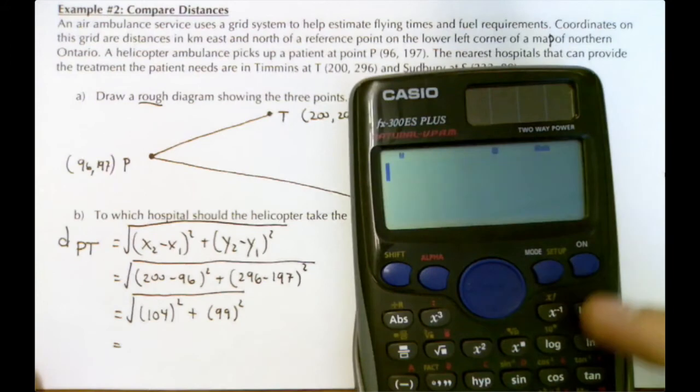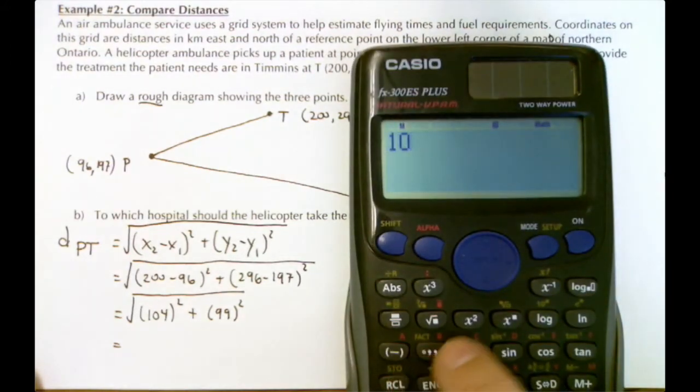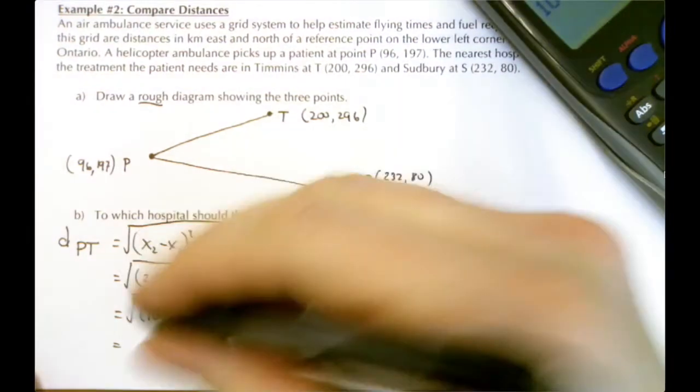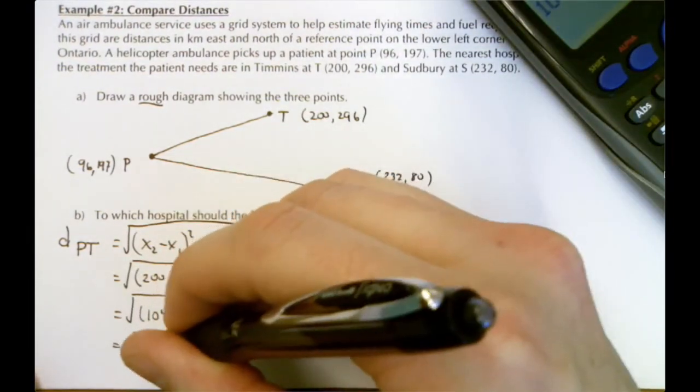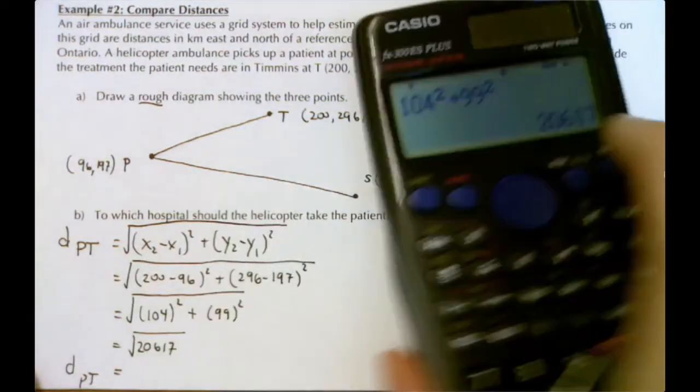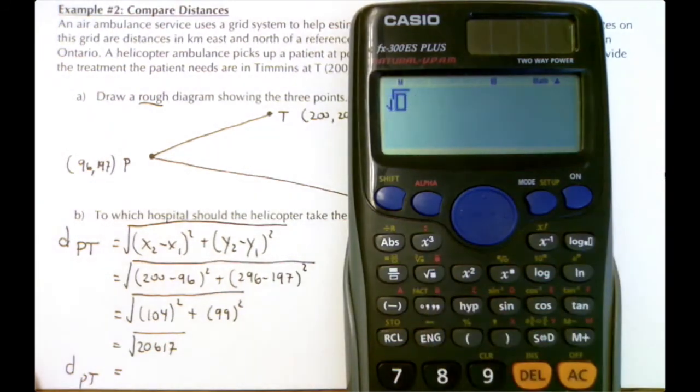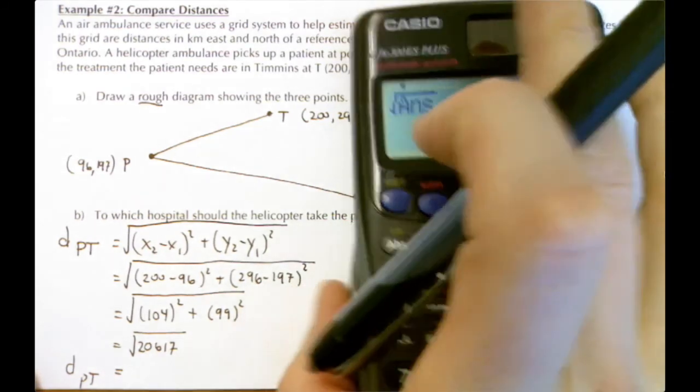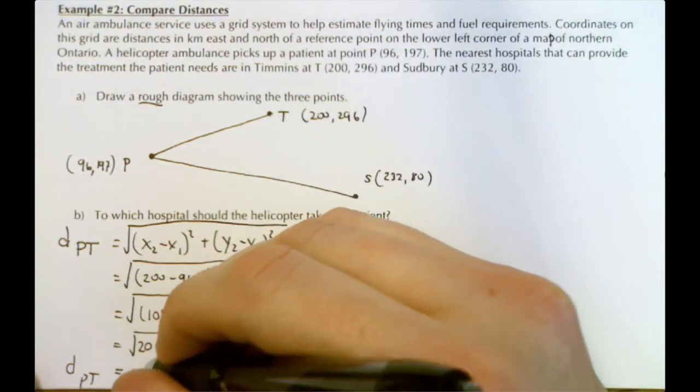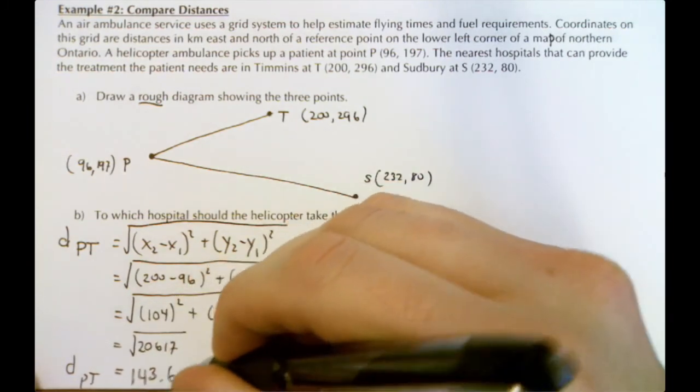We get 20,617. So our final answer is √20,617. The distance between P and T will be √20,617 = 143.6 kilometers.